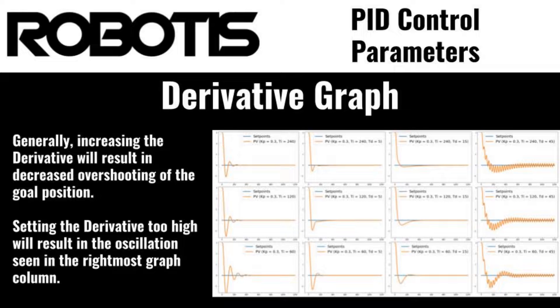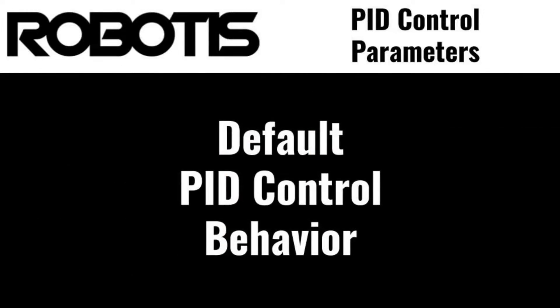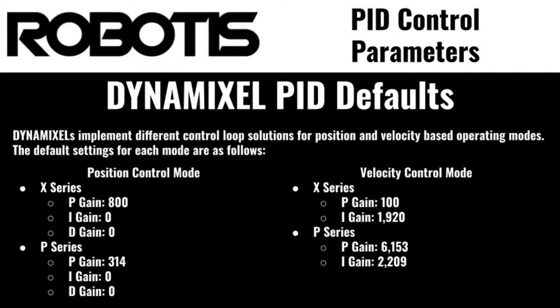With that brief introduction out of the way, we can start with the lesson at hand. Let's begin with a quick demonstration of the behavior of all Dynamixels with default values for PID gain, which for Dynamixel series actuators is 800 P gain, 0 I gain, and 0 D gain. As this video continues, I will explain what effect adjusting each of these values will have on the motion of your actuator, but for now let's see what the motion looks like at default settings.